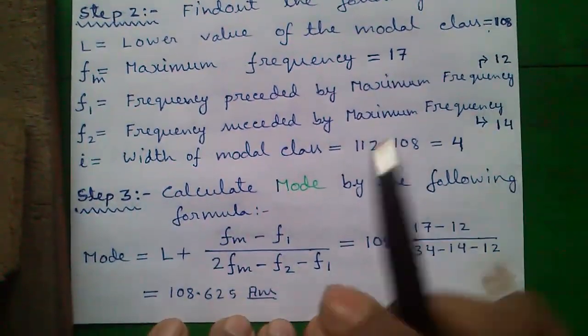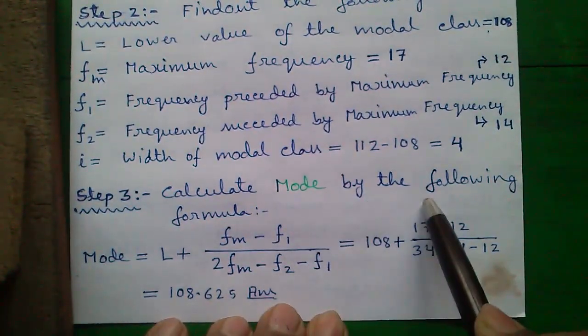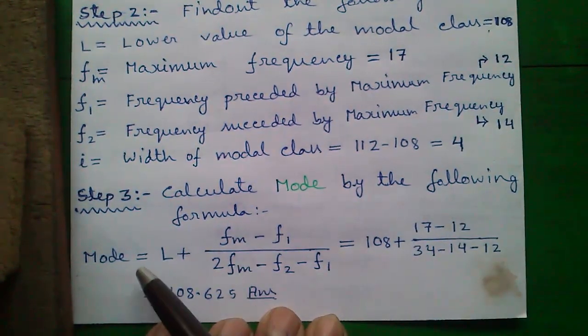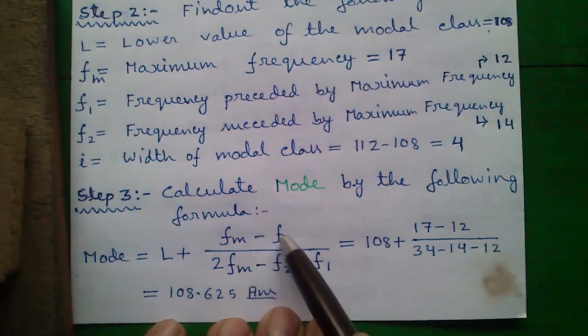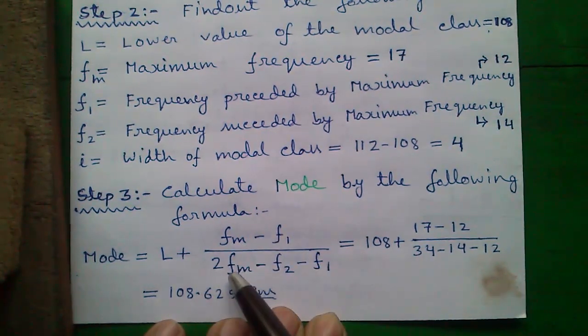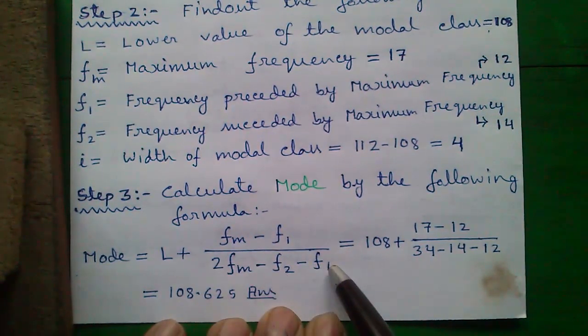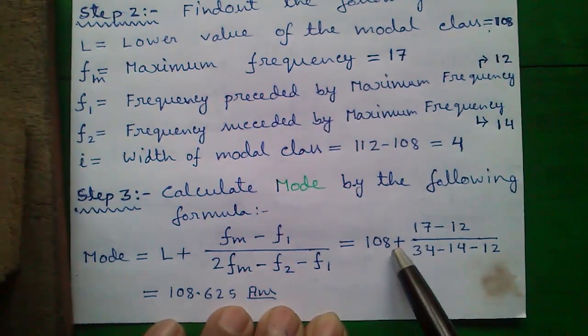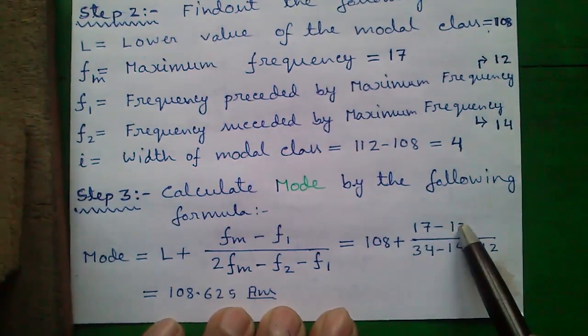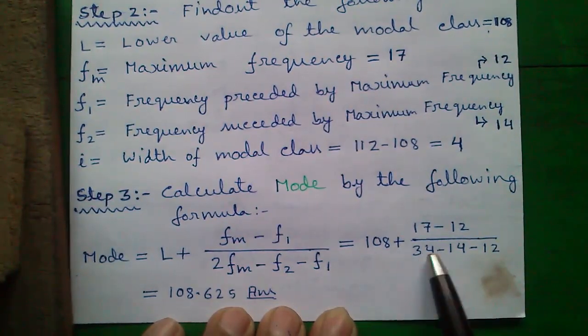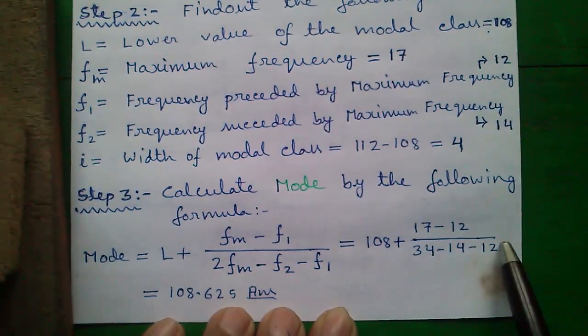Step 3: Calculate the mode by the following formula. Mode equals L plus (Fm minus F1) divided by (2Fm minus F2 minus F1). Which equals 108 plus (17 minus 12) divided by (2 times 17, which is 34, minus 14 minus 12).